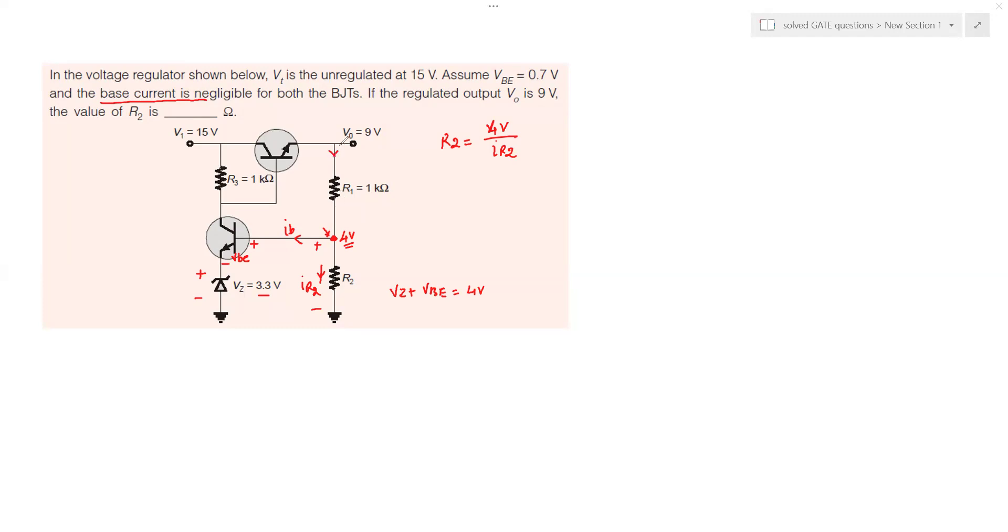There is one more current coming from this 9 volt supply through this resistor R1. Obviously this IR1 will be V0 which is 9 volt divided by the value of R1. 9 divided by 1 K, it's a 9 milliampere current. And here you got the 4 volt right here.